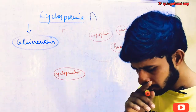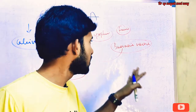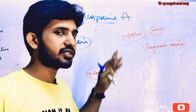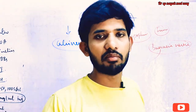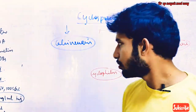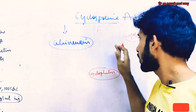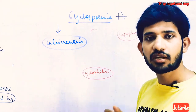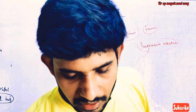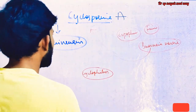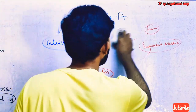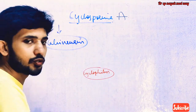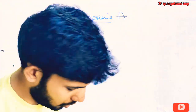Nowadays we don't get cyclosporine from this fungus. We are synthesizing all these compounds in the laboratory, so it is very easy to synthesize. We are no longer obtaining the compound from this fungus; we are artificially synthesizing these compounds. Now let us see the mode of action of cyclosporine, which is very important.